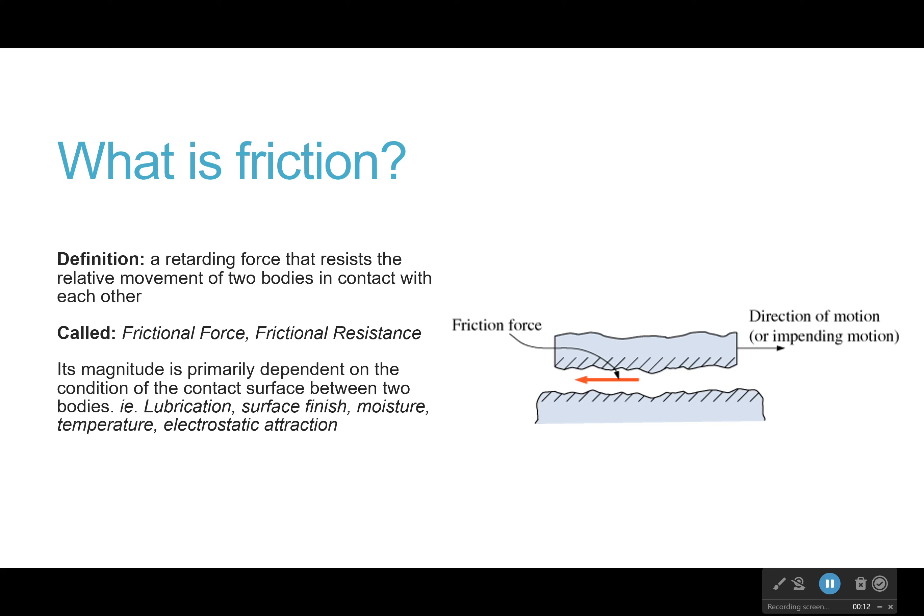So first off, what is friction? Well, it's a retarding force that resists the relative movement of two bodies in contact with each other. So in key words right here, resist movement. If you are trying to go right, friction is pushing left. If you are trying to go left, friction is pushing right. It always wants to go against you, never with you. Whatever direction you're about to move, it's trying to stop that.